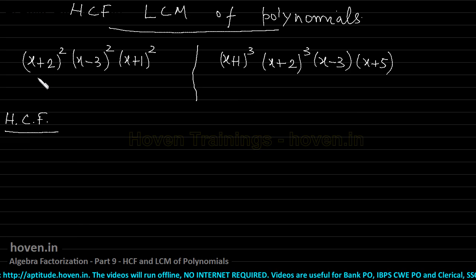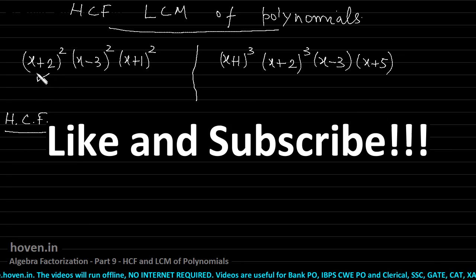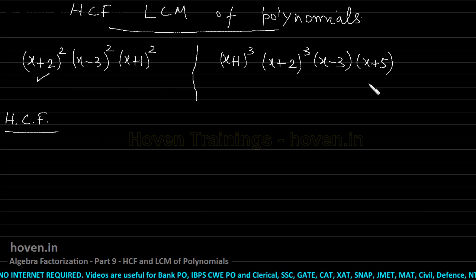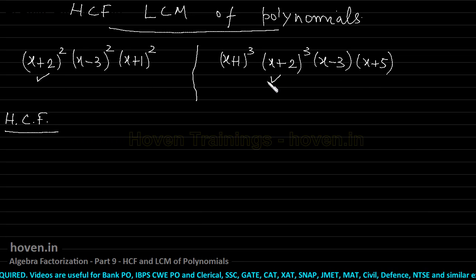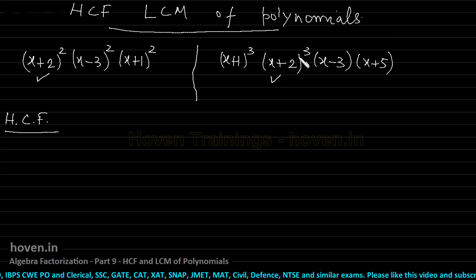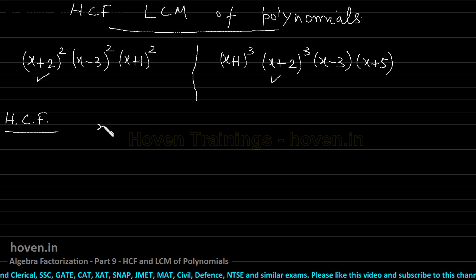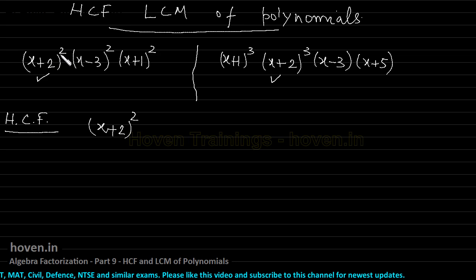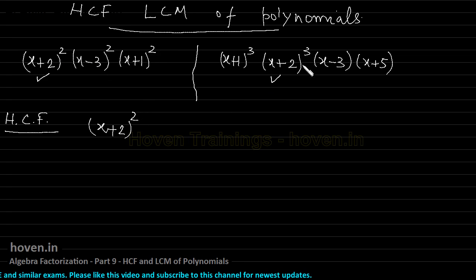Start with the first factor — put a tick mark. This is (x+2). Look for (x+2) on the right side. It is there — tick it. Now, which is the lower of these two powers? This one has power 2 and that one has power 3. We take the lower power and write (x+2)². Had the other power been 4, we would have taken (x+2)³ because that would have become the lower one.